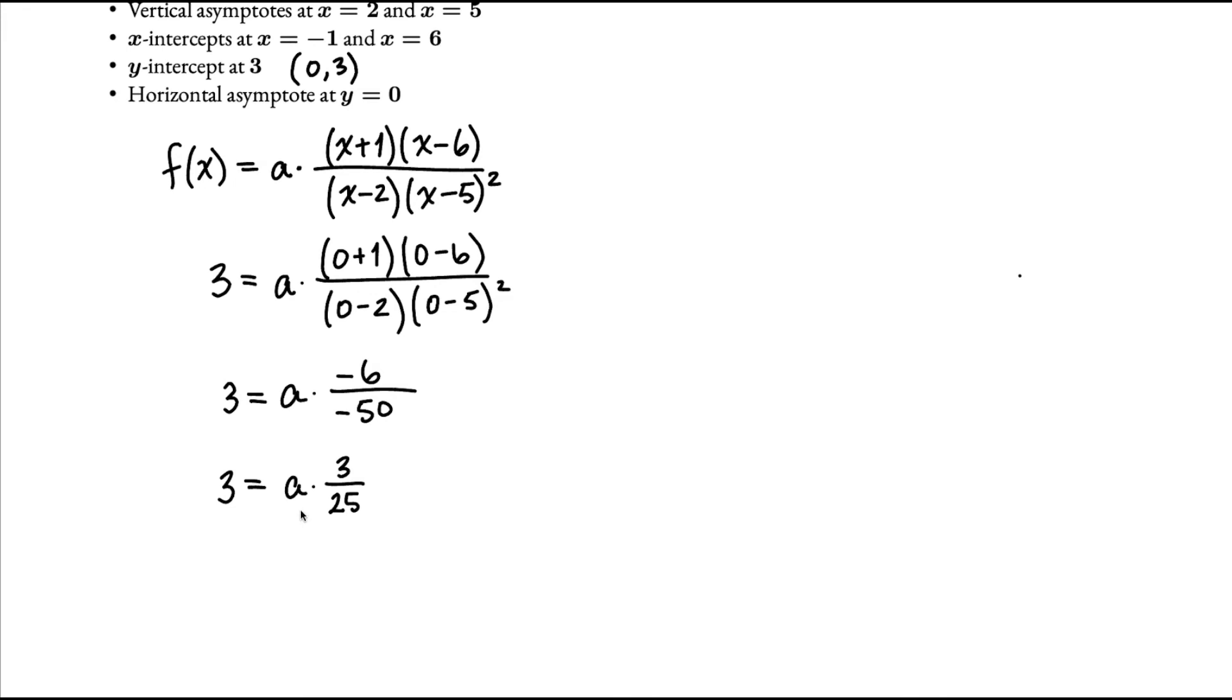And now that we have this, we can solve for a by multiplying by the reciprocal of this fraction. So we'll multiply both sides by 25 over 3, and that will cancel this fraction out here. So those 3's are canceled, the 25's cancel, and here the 3's cancel as well. We get 25 equals a.